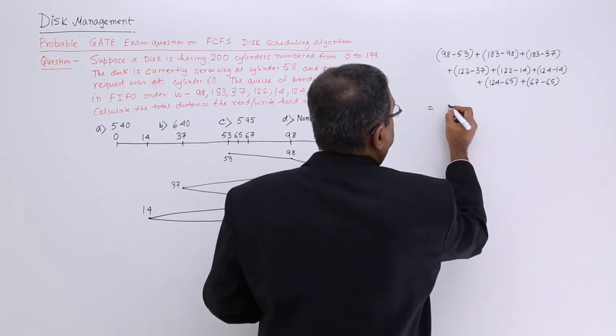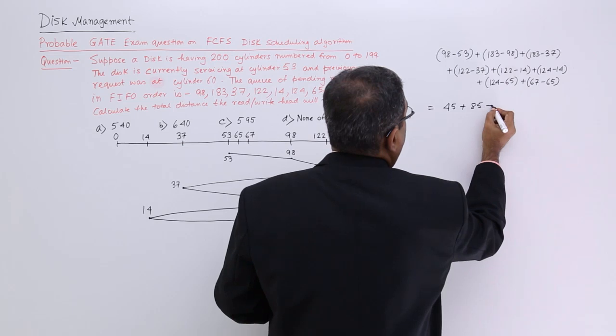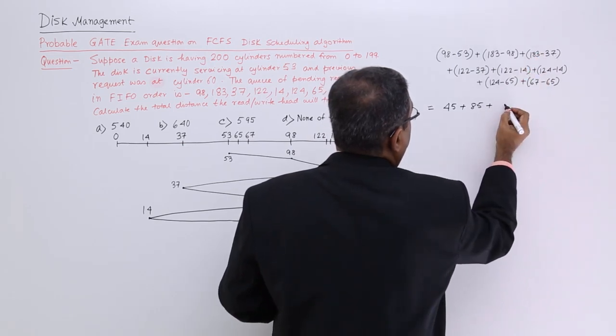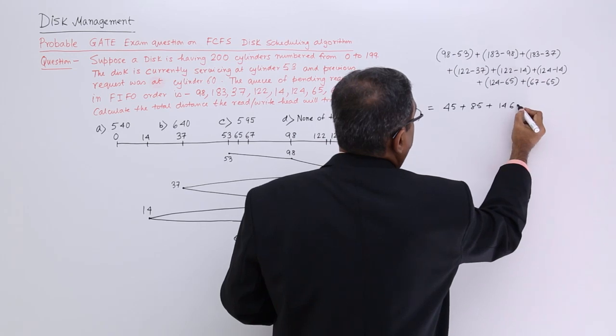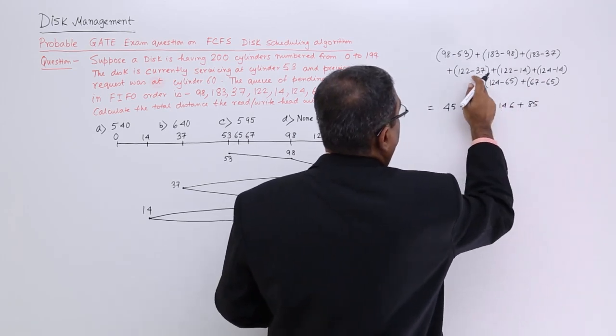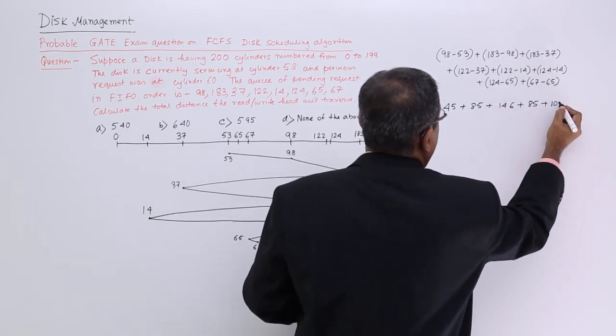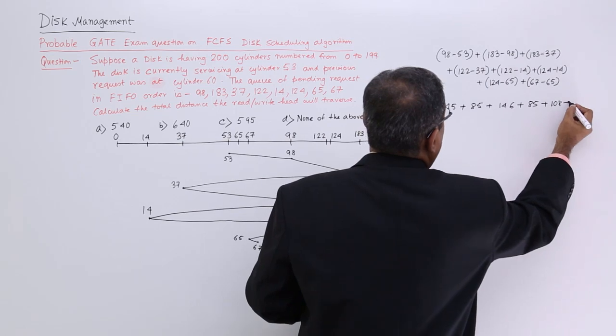So if you go for subtraction, it is 45. It is quite obvious it will be 85. So this one will be, I think it is 147, 146. Next one it will be 85. If you go on subtracting, yes. So now it is quite obvious it will be 108, then I shall go for this.